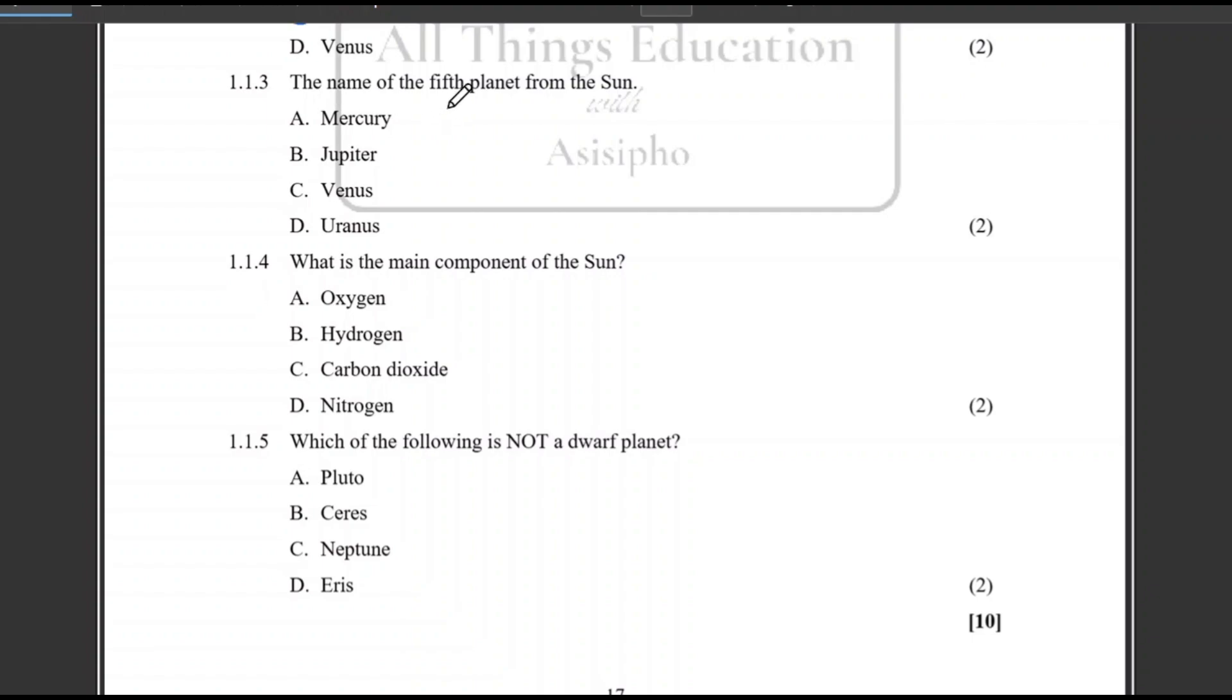Question 1.1.3, the name of the fifth planet from the sun. So planet number five from the sun. Remember, there's a technique that teachers use in schools in order for you to remember the correct sequence of the planets from the sun. So I'm going to write this one. It has to do with my very excited mother or my very educated mother. So whatever method that your teacher taught you, please do write it down in your question paper somewhere so that you can remember the order of the planets.